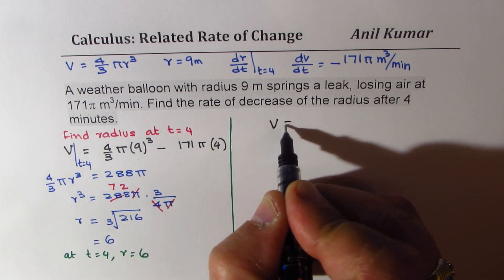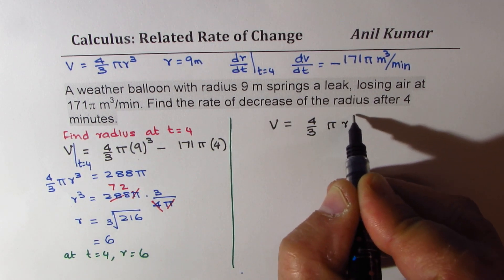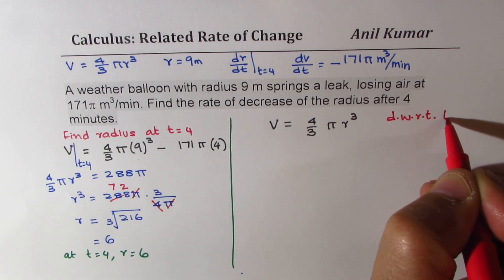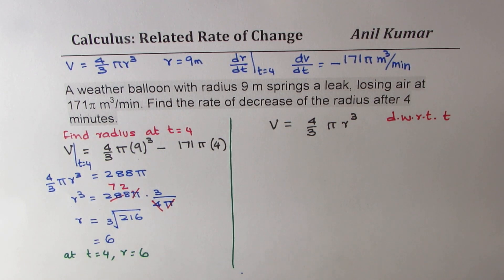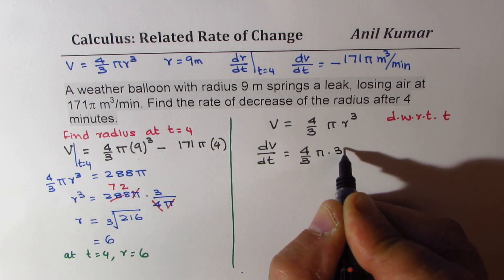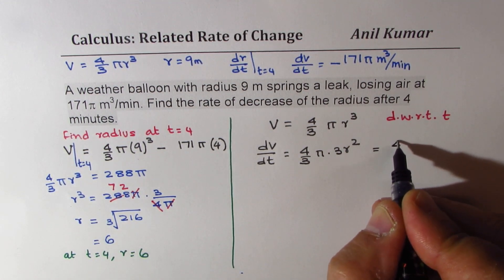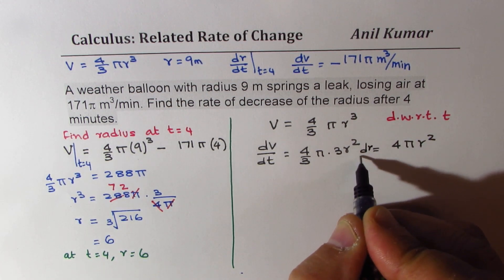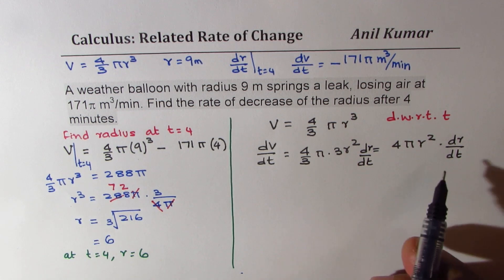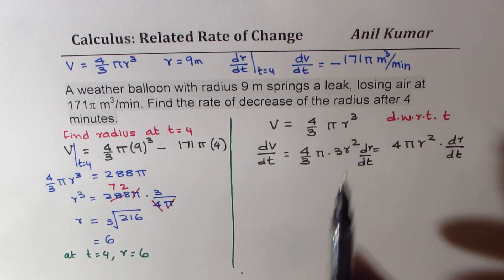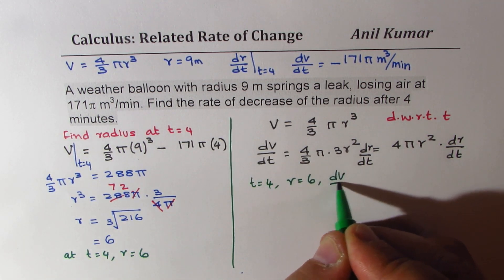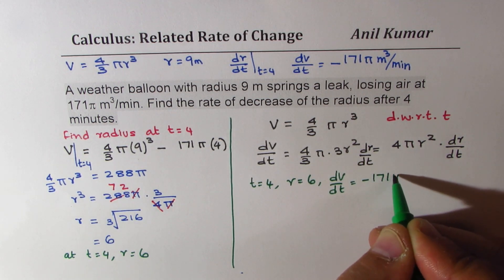So again, volume is 4/3 πr³. So now we can differentiate with respect to time on both sides. So we get dV/dt = 4/3 π times 3r² times dr/dt. That gives you 4πr² dr/dt. We're doing implicit differentiation with respect to time. We need to find dr/dt at t = 4. Now at t = 4, radius r is 6. We know dV/dt is -171π.